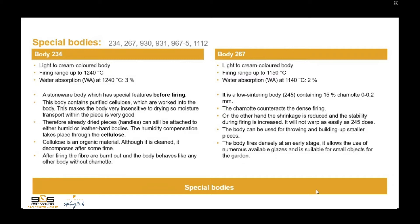Body 267 is also a light and creamy colored body. The firing range goes up to 1150 only, with water absorption at this temperature of approximately 2%. It is a low-sintering body, like body 245, containing 50% chamotte 0–0.2 mm. The chamotte counteracts the dense firing; on the other hand, the shrinkage is reduced and the stability during firing is increased — it will not warp as easily as 245 does. The body can be used for throwing and building smaller pieces, fires densely at an early stage, allows use of numerous glazes, and is suitable for small garden objects.